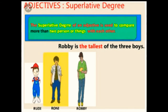For example, with three girls, Robbie is the most tall among these three girls. When we use superlative degree, the normal word tall becomes tallest. Robbie is the biggest girl.